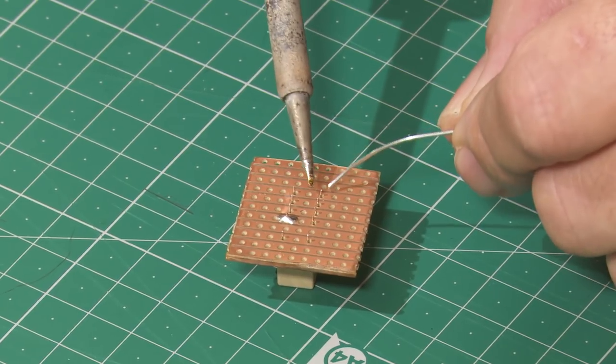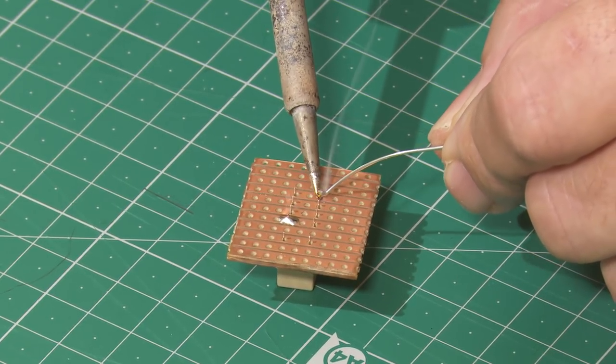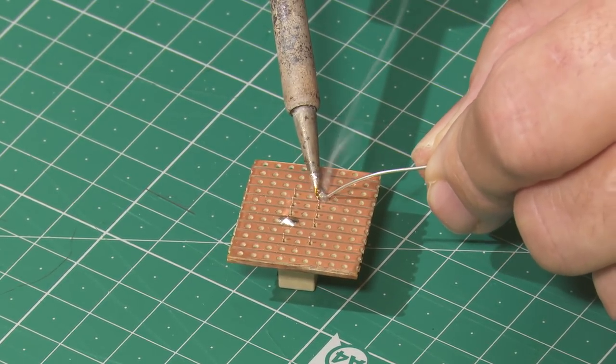And the first component to be soldered are the eight contacts of the relay.